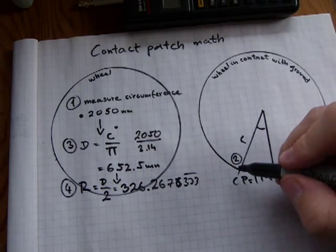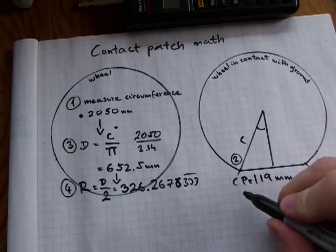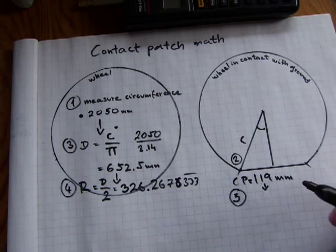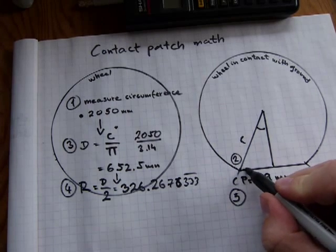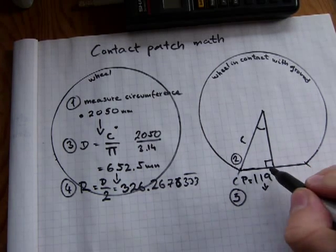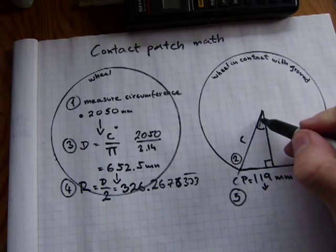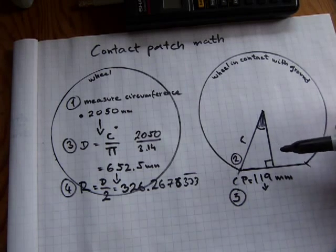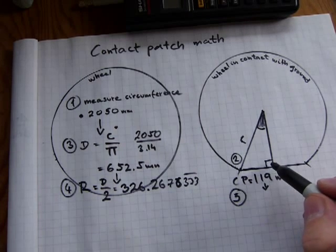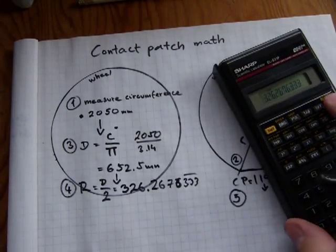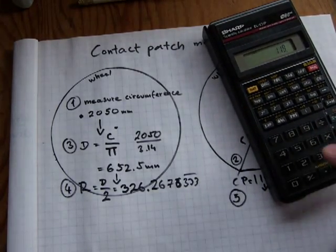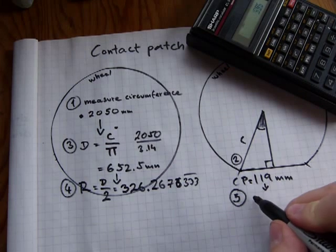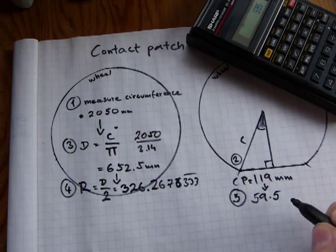Step five: we need to chop the contact patch size in half, because for this right-angle triangle calculation — there's your right angle — to get this angle, I need the hypotenuse and one side. I need to cut the 119 millimeters in half: 119 divided by two equals 59.5 millimeters. So 59.5 is what I write down.